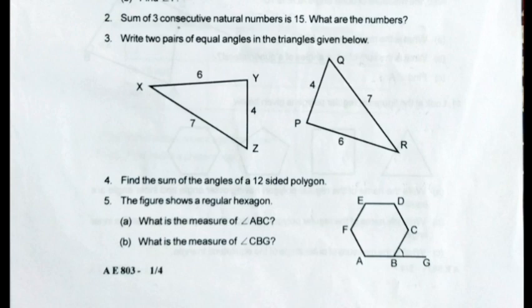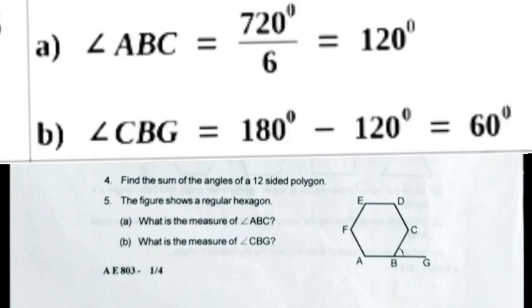Question 5. The figure shows a regular hexagon. A. What is the measure of angle ABC? B. What is the measure of angle CBG? Answer: A. Angle ABC equals 720 degrees divided by 6 equals 120 degrees. B. Angle CBG equals 180 degrees minus 120 degrees equals 60 degrees.